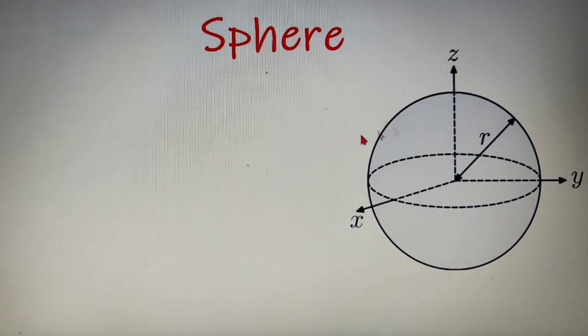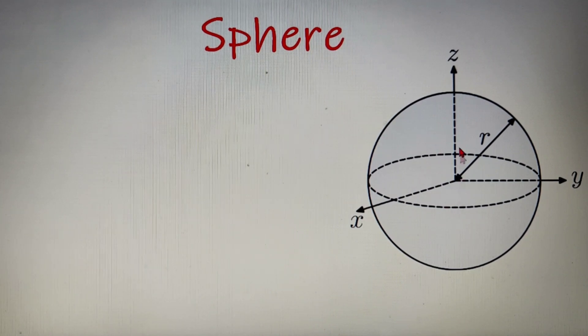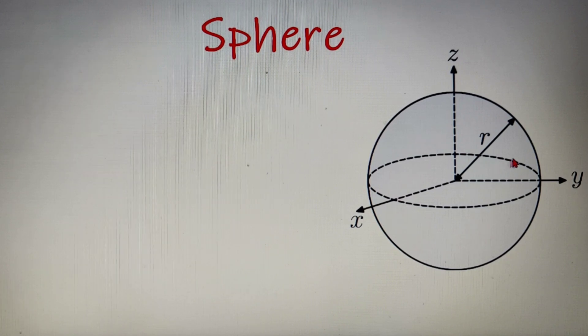Now there are some other basic properties that define a sphere and they are as follows. A sphere has no edges or vertices. Now you can clearly see by yourself that a sphere cannot have any edge or vertices because it is a completely round shape.